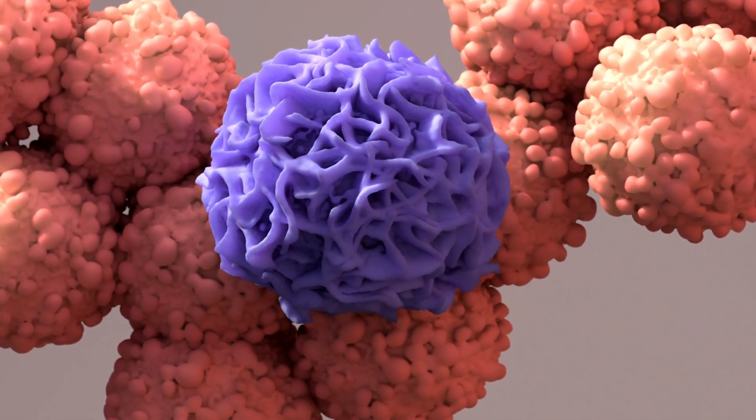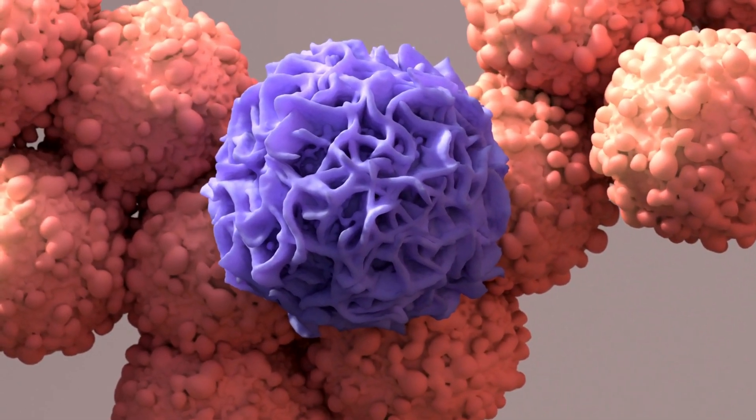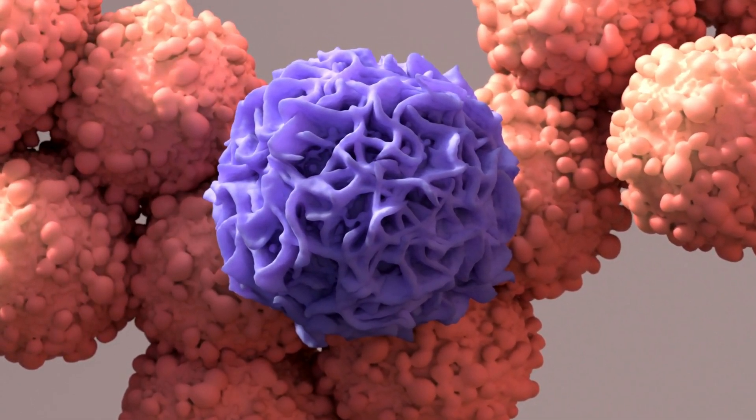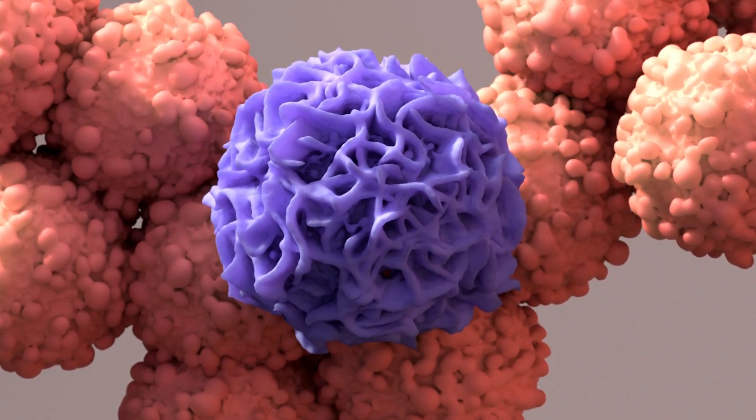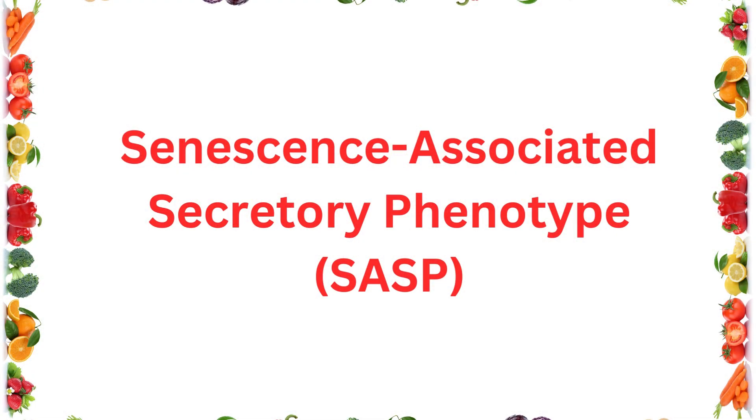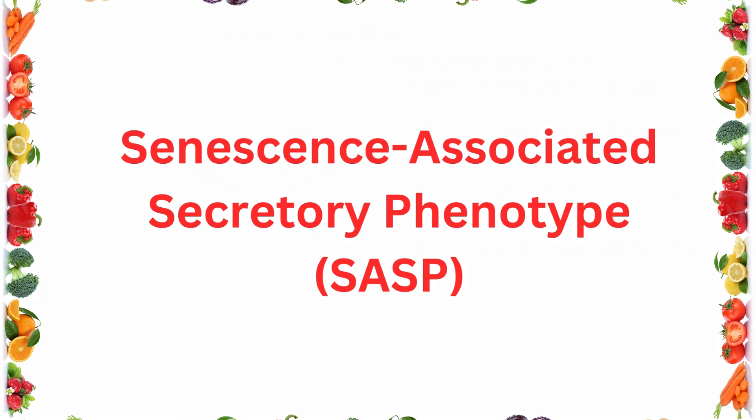In addition to the fact that aging cells cope worse with their functions, they also acquire the senile secretory phenotype SASP, which means senescence-associated secretory phenotype and, by releasing many soluble factors into the extracellular environment, which cause inflammation and changes in the extracellular matrix, negatively affect the tissue microenvironment and the entire organism.